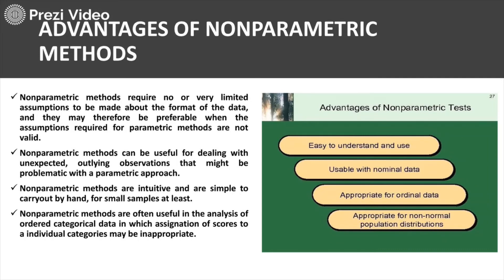There are several advantages and disadvantages associated with non-parametric tests. Advantages include: there are no strict assumptions (only very limited ones); the tests handle unexpected outlying observations where data is non-homogeneous; they are intuitive and simple to carry out by hand compared to parametric tests; and they are highly useful in the analysis of ordered categorical data where scores are assigned to individual categories, such as ranks or scores in a subject.